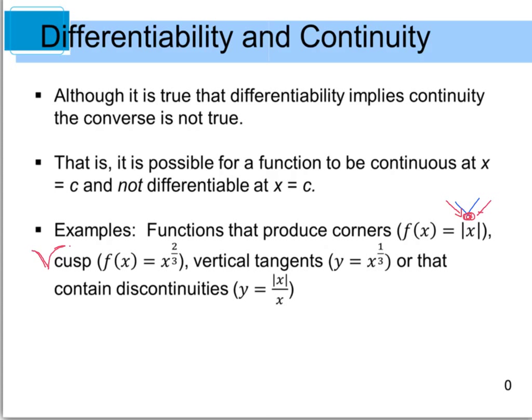Vertical tangent, something like y equals x to the 1/3. That's going to be your typical function that looks like this, and it's kind of like a point of inflection. We're changing from a positive to a negative slope.